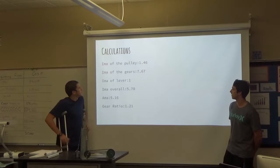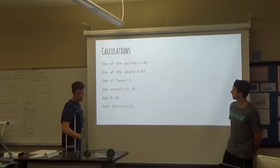So here are our calculations. The AMA of the pulley was 1.46, the gear 7.67, the lever was one.